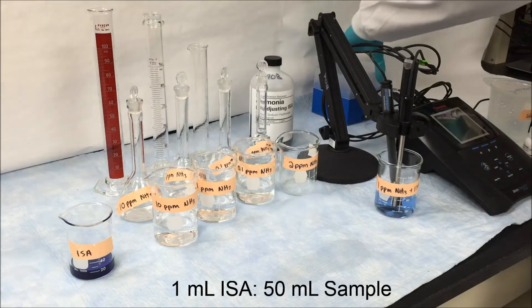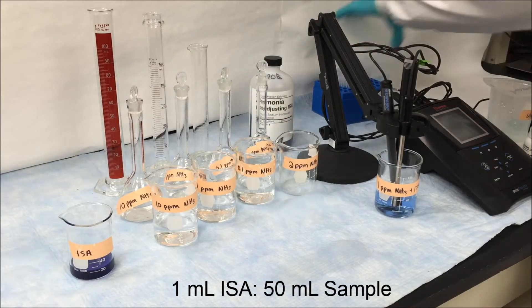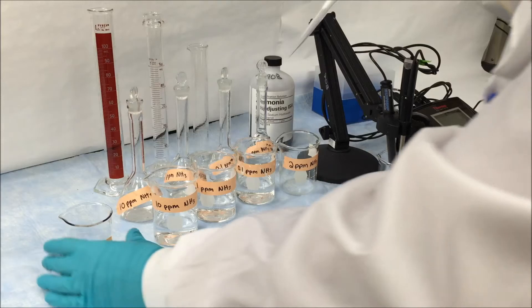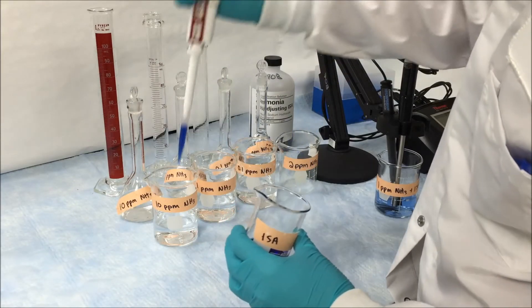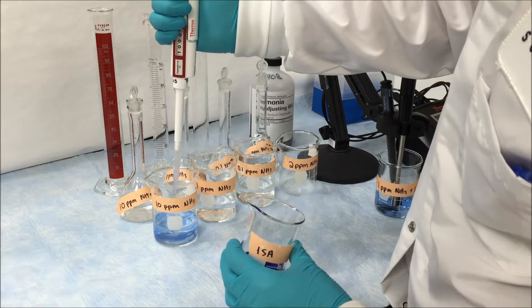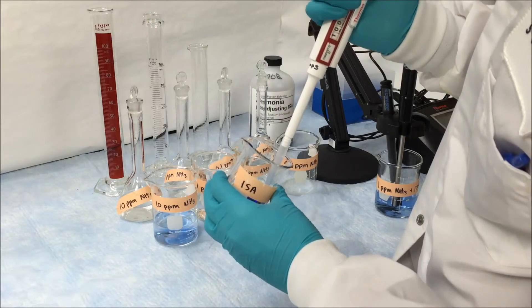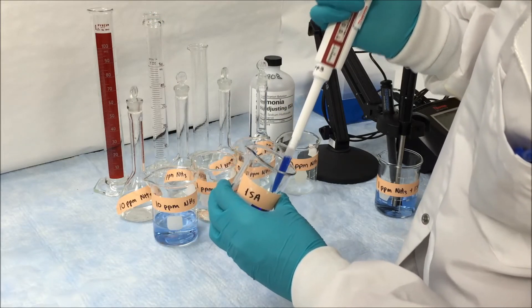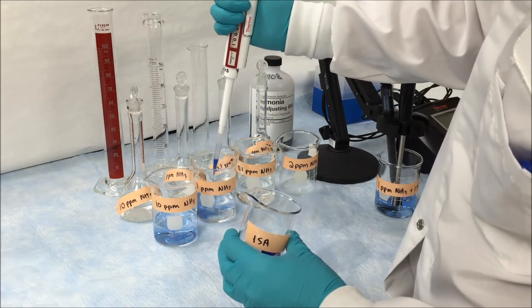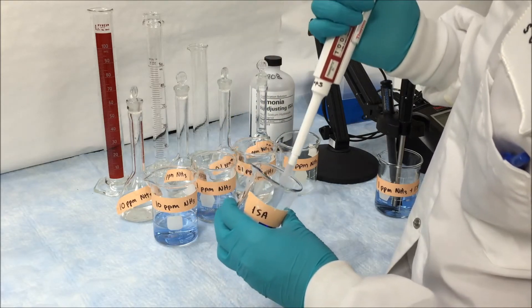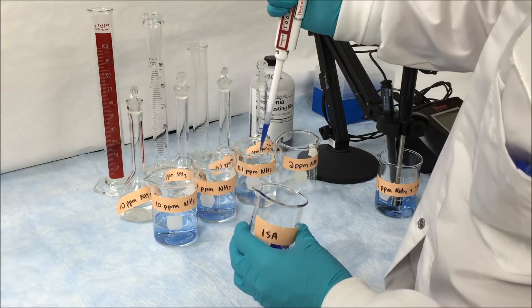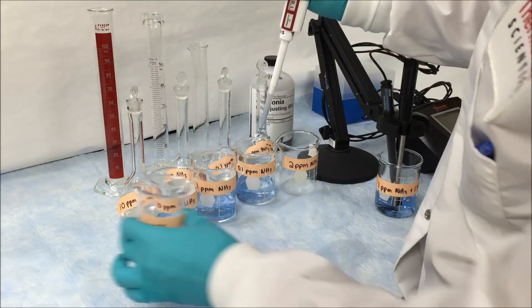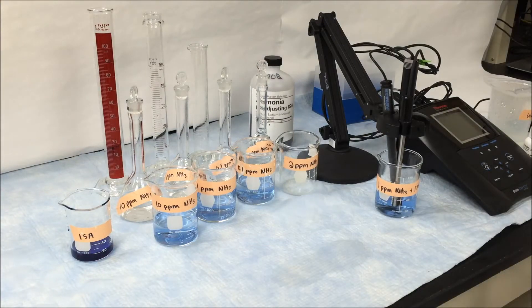Once all the solutions are poured, we're going to add our ISA. Since we have 50 milliliters of sample, we're going to use 1 milliliter of ionic strength adjuster. Using a fresh pipette tip and making sure you have a full milliliter of solution, slowly add 1 milliliter to each sample. You want to make sure that you add your ISA right before you do your calibration since ammonia is a gas. The longer the ISA is in your calibration standard, the more gas you have a chance of losing.